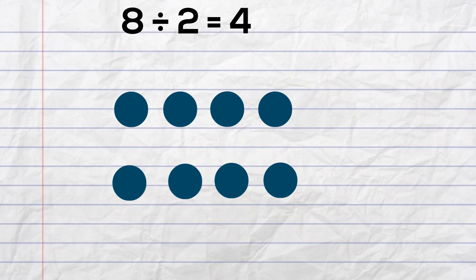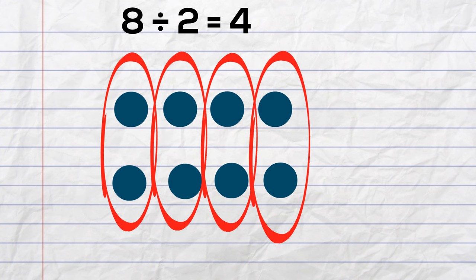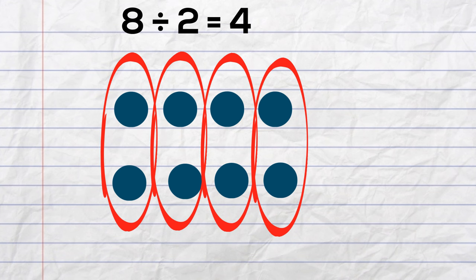So I have divided eight into columns of two. So to get my answer with a quotient, I count the number of columns. One, two, three, four. So eight divided by two equals four.